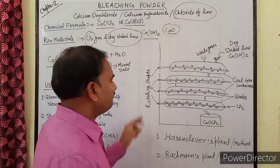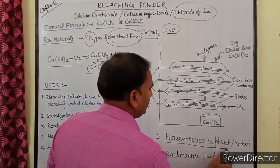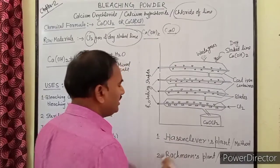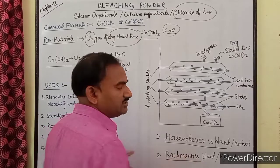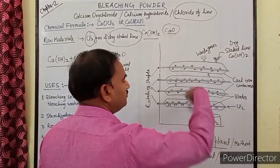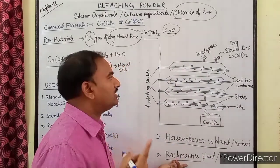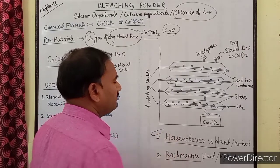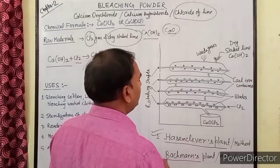अब हम देखते हैं bleaching powder कैसे बनाते हैं। इसमें एक plant है जिसे Hasson Clavers plant कहते हैं। Bleaching powder दो methods से बनाया जाता है: पहला Hasson Clavers method और दूसरा Backman method। यहाँ पर हम पहले Hasson Clavers method देखते हैं।